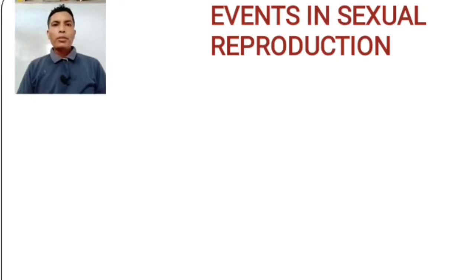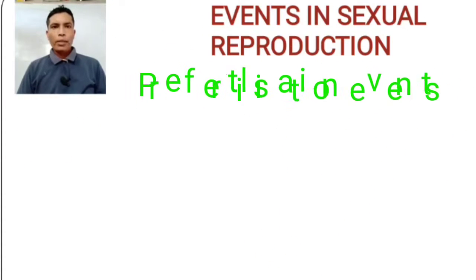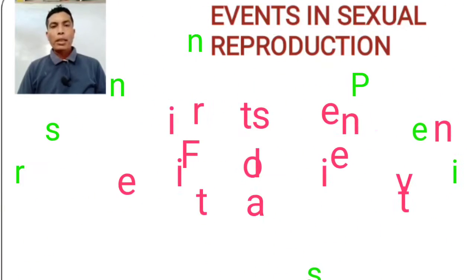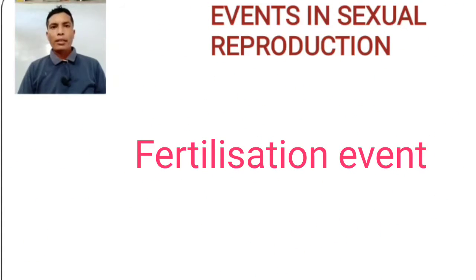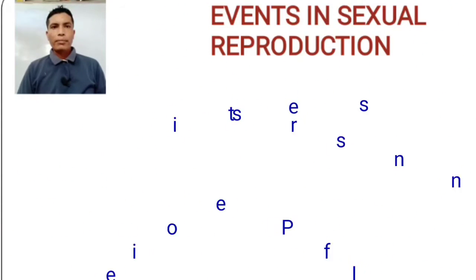Dear students, let us know about the events in sexual reproduction. There are three events in sexual reproduction: pre-fertilization events, fertilization events, and post-fertilization events.